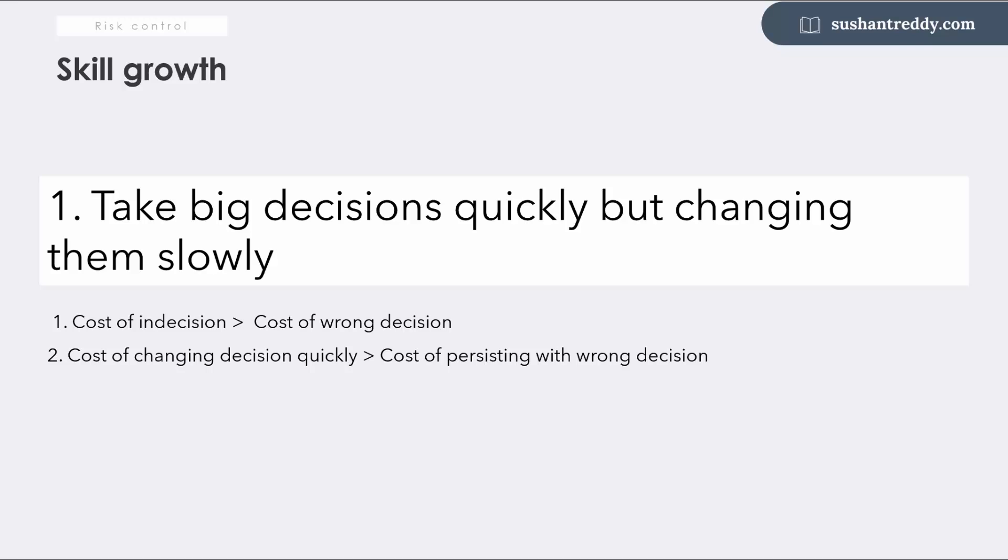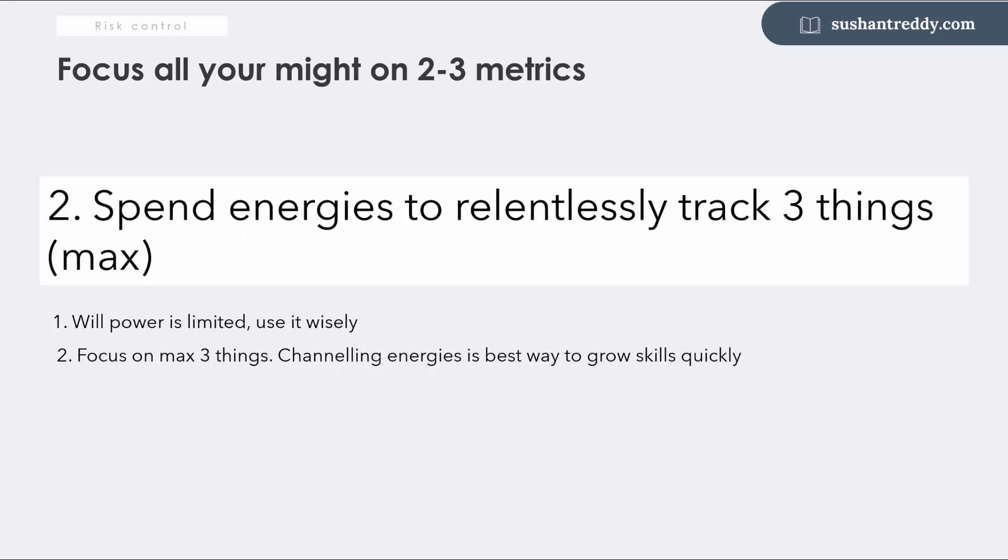Two, define two to three actionable metrics and focus all your mind to improve those metrics. Our willpower is limited, so don't spread it across multiple things. Focus on the two to three metrics and relentlessly pursue the improvement of those metrics. Channeling energy into improving a small number of metrics automatically improve skills. A metric for a startup could be anything from the number of people on the website to the number of client demos to the number of sales calls per month to the server response time and so on.